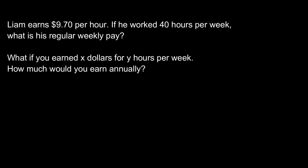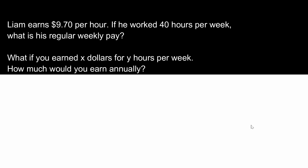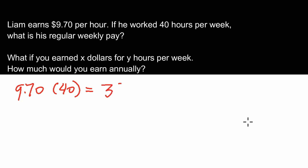Example three: Liam earns $9.70 per hour. If he worked 40 hours per week, what is his regular weekly pay? We take $9.70 and multiply it by 40 hours, and we get $388 per week.